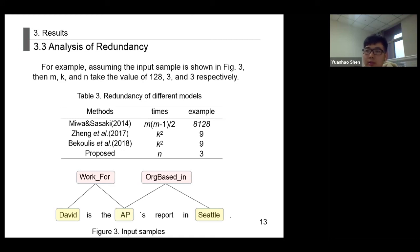The number of times of the four methods are 8192, 9, 9, and 3, but the example only has 2 triples. Therefore, if the value of n is appropriately selected, the redundancy of the proposed method is much smaller than that of other methods.